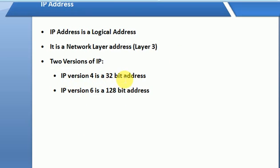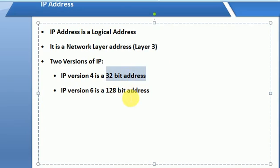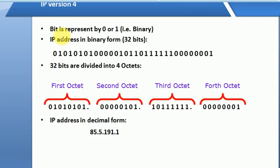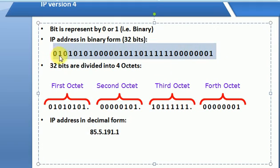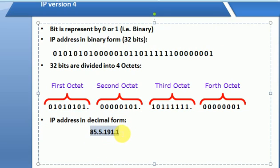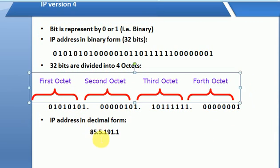The IP address is 32-bit. We have already talked about bits and bytes — you can click on that video for more detail. A bit is represented by either 0 or 1. So the IP address is a 32-bit address, and we can represent it in decimal format.